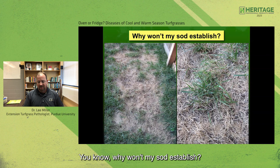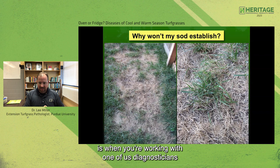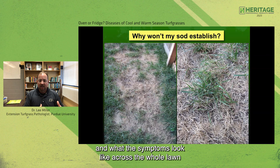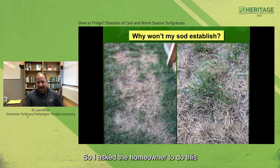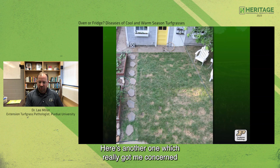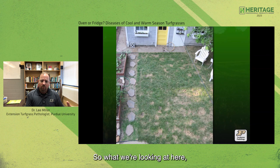Here's an instance with a homeowner: why won't my sod establish? Obviously they put some money into this and it's declining very rapidly. One of the hints I want to give is when you're working with a diagnostician, take a step back and give us an idea of what the whole picture looks like — what the symptoms look like across the whole lawn. I asked the homeowner to do this and the fellow got up on his roof. There's a lot of shade, which can contribute to disease activity.